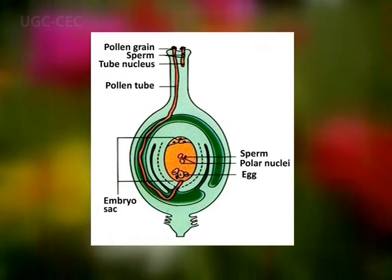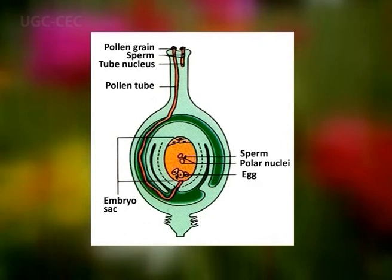In fertilization, if a pollen grain lands on a compatible stigma, a pollen tube grows so that the egg cell in the embryo sac can be fertilized. A tube emerges from the grain, with growth controlled by the tube nucleus at the tip. It may grow downward in response to chemicals made by the ovary — a response known as chemotropism. During growth of the tube, the generative nucleus divides by mitosis to produce two male gametes. The pollen tube enters the ovule through the micropyle and penetrates the embryo sac; the tip bursts open, one male gamete fuses with the egg cell to produce a diploid zygote, and the other fuses with the secondary diploid polar nucleus to form the triploid primary endosperm nucleus — this is double fertilization in angiosperms. The ovule is then known as a seed.